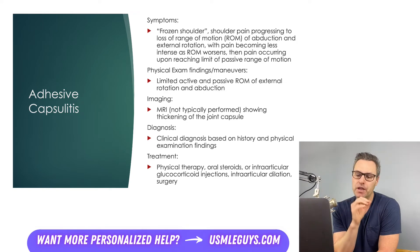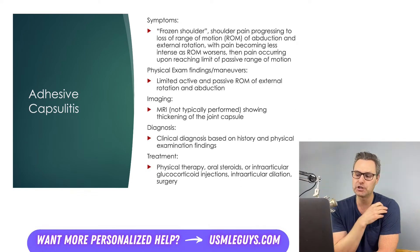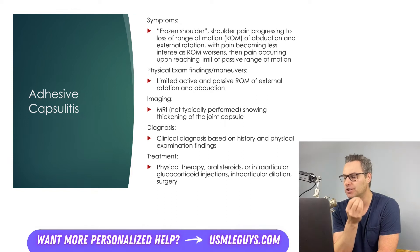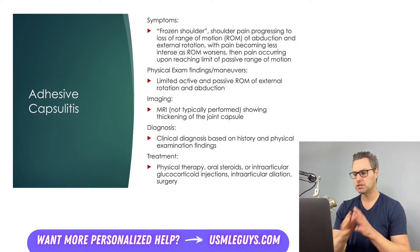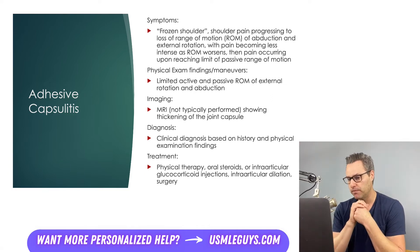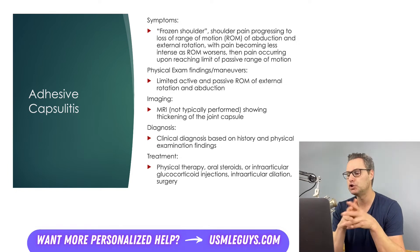On physical exam, the patient will have limited active and limited passive range of motion with external rotation and abduction. The history and physical exam findings are usually enough to make a diagnosis of adhesive capsulitis. If there is a possibility of other shoulder pathology, an MRI can be performed, which in the case of adhesive capsulitis would show thickening of the joint capsule.